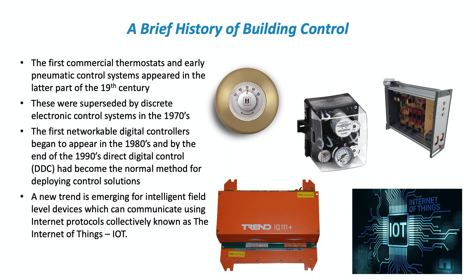It turned out that this discrete system was actually a blip in the development of building control, because once we had these discrete devices — devices which provide one function — people realized it would be much more useful if you could share information between controllers. The process control industry had been doing this for quite some time, and that transitions quite well to controlling buildings.